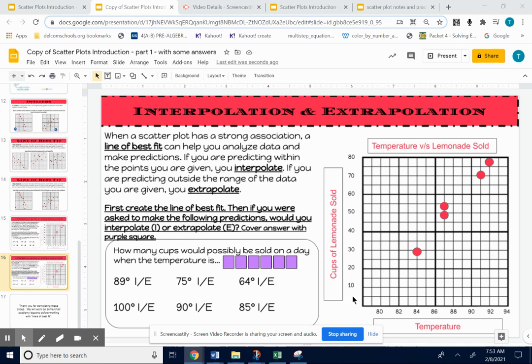When a scatterplot has a strong association, a line of best fit can help you analyze data and make predictions. If you are predicting within the points you are given, that's called interpolate.